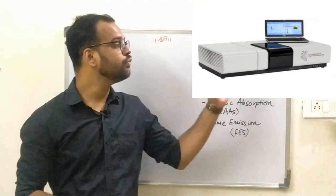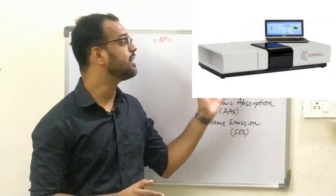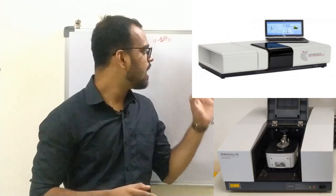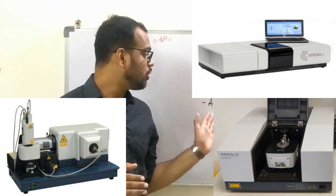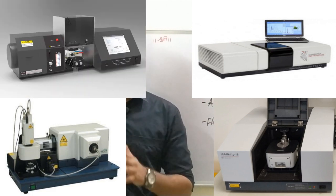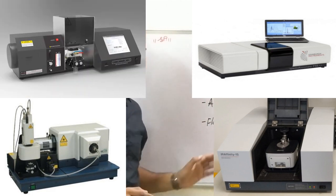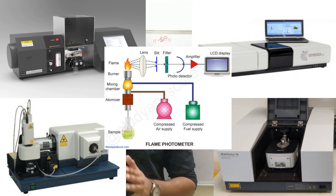The different techniques are UV visible spectrometry that is ultraviolet visible spectrometry, IR that is infrared spectrometry, Raman spectrometry, atomic absorption spectrometry that is AAS, and flame emission spectrometry that is FES.